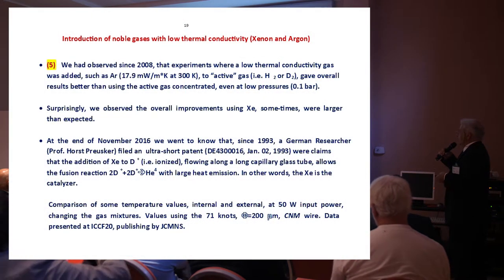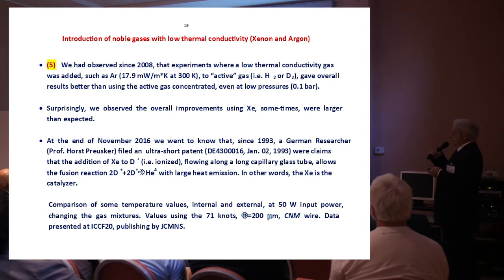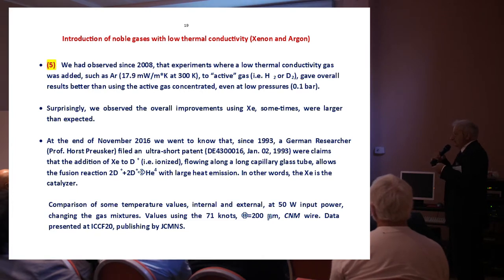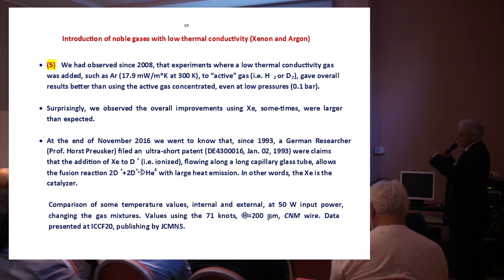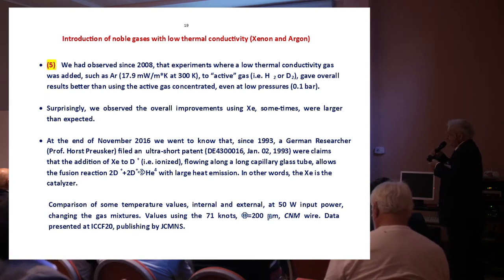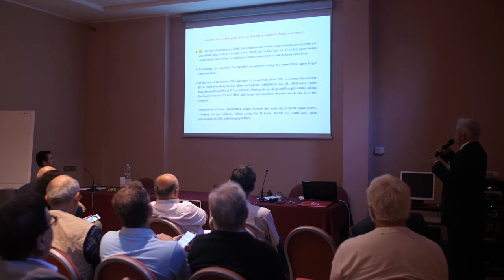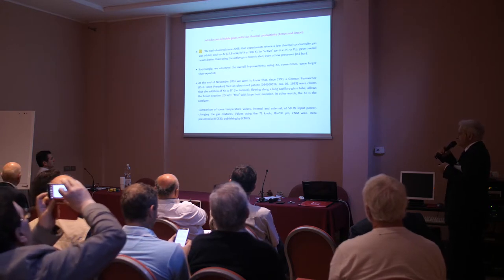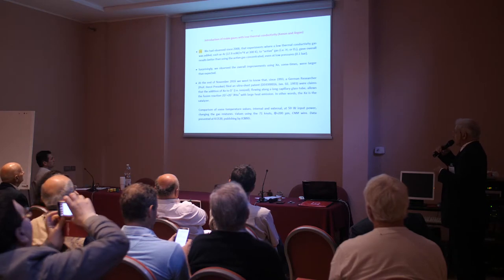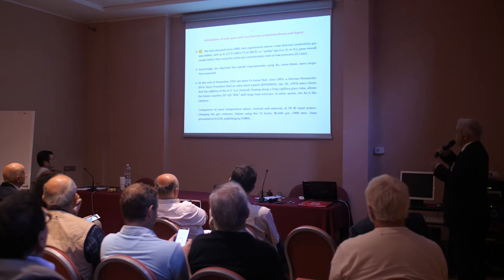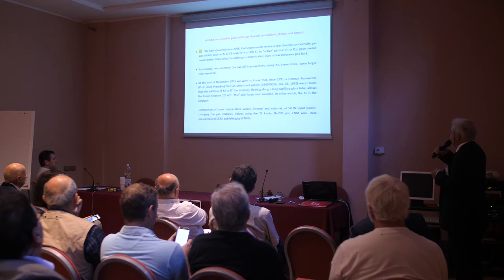We were also lucky with the choice of gas. We use argon or xenon to decrease thermal conductivity, because wire temperature is a key parameter to get anomalous heat — we need maximum insulation between the cell interior and outside. Xenon works very, very well. We later found out that a German researcher in 1993 filed a patent claiming that ionized deuterium and xenon can produce energy emission with almost no radiation — just helium-4. Maybe another coincidence, but it worked.